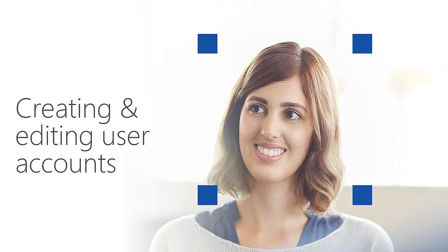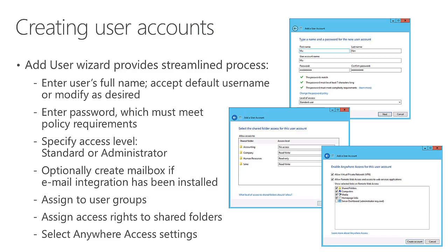When creating and editing user accounts in the Essentials environment, we've made it easier. If you've used Active Directory Users and Computers in a normal Windows Server environment, you know there are dozens if not hundreds of options. In the Essentials environment, we've streamlined that experience and focused on what's most important. The Add User Wizard lets you enter the user's full name, automatically provides a default username you can modify, set a password meeting your policy requirements, and specify the access level — standard or administrator.